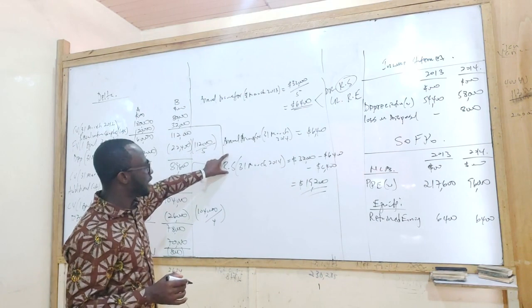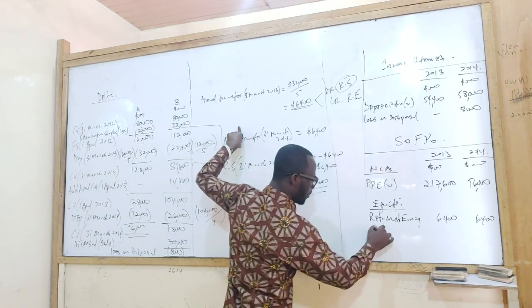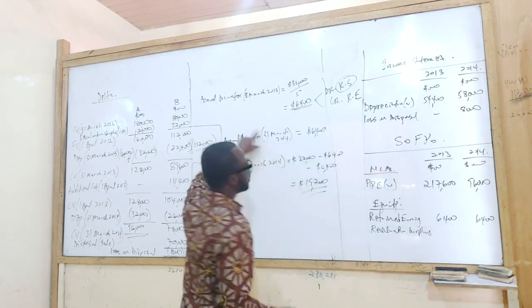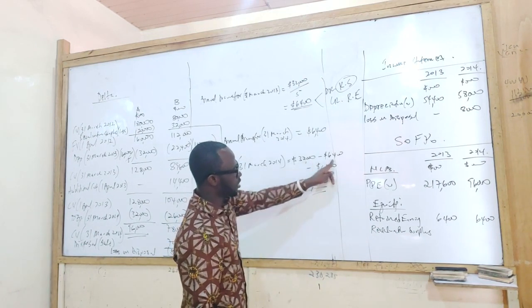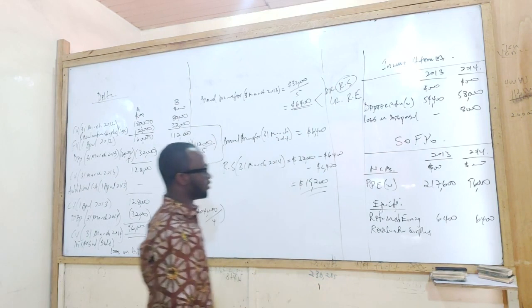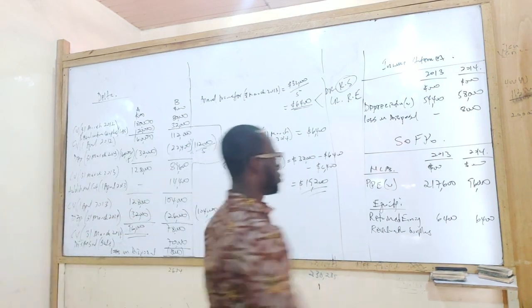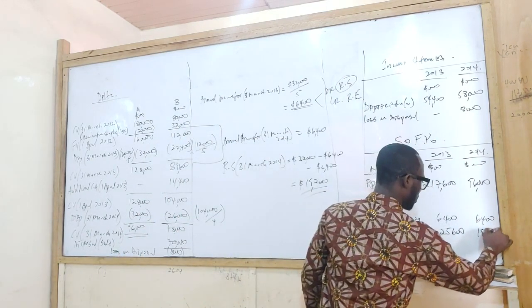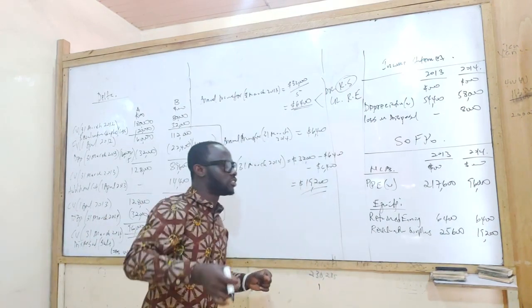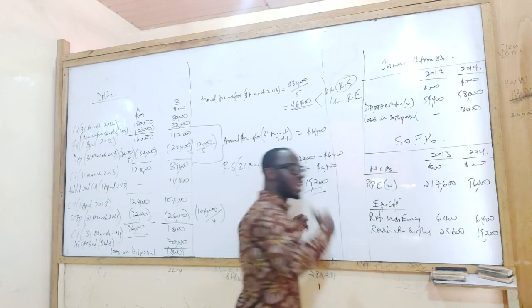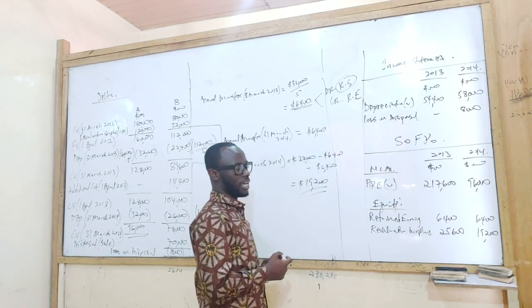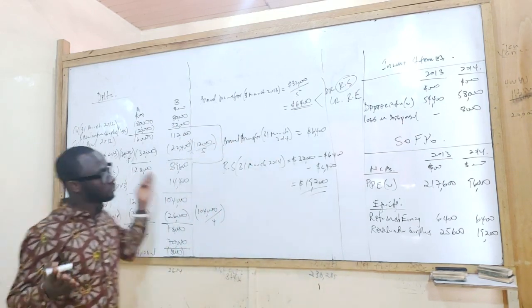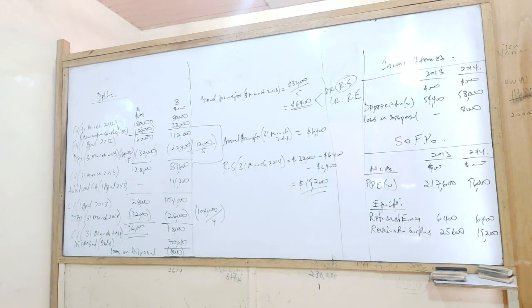Under equity, we have retained earnings: 6,400 for 2013 and 6,400 for 2014. For revaluation surplus in 2013 it's 25,600. For 2014, the revaluation surplus is 19,200, but as I said, in 2014 this 19,200 will be reclassified as undistributable reserves because there's no more transfer being made. That is how this question is answered.